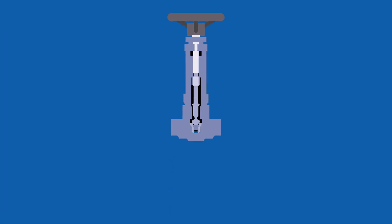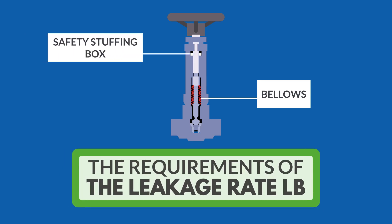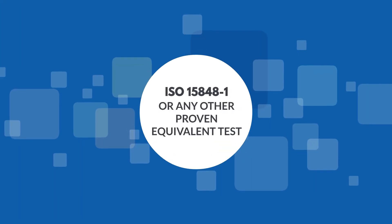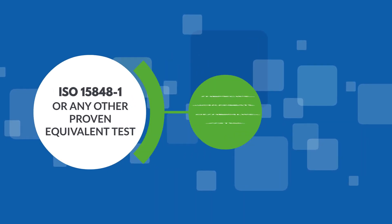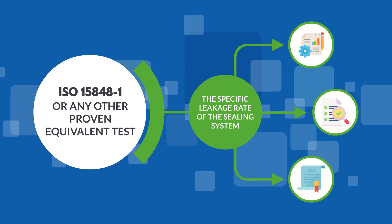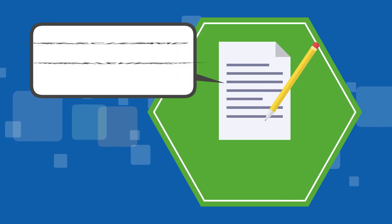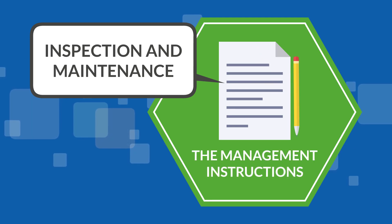Also, seals of spindle bushings, designed as high-quality sealed metallic bellows with downstream safety stuffing boxes shall meet the requirements of the leakage rate LB without individual verifications. Otherwise, ISO 15848-1 or any other proven equivalent test must verify the specific leakage rate of the sealing system for testing, evaluation, and qualification. The inspection and maintenance requirements of the sealing systems must be specified in the management instructions.